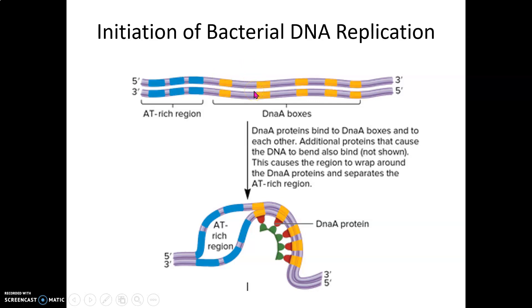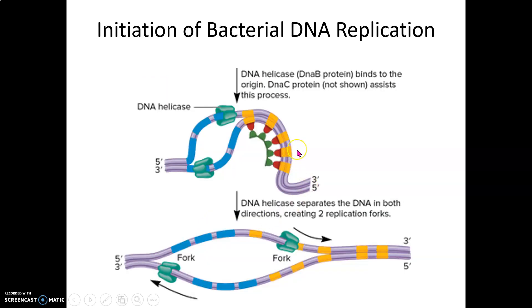At these DnaA boxes, DnaA proteins bind and cause distortion, allowing things to start separating. They also recruit DnaC, which helps DnaA recruit DnaB, which is also a helicase. This is how we initiate replication in bacteria.